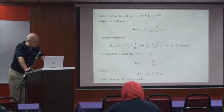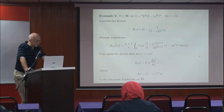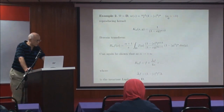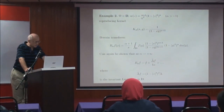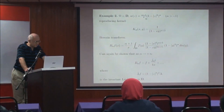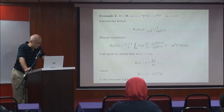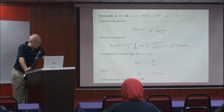Second example: we take the unit disc, or for those who prefer it, the non-Euclidean model — the Poincaré half-plane. We take the unit disc and the weight, again depending on a parameter alpha which will become 1 over the Planck constant, and we take the weight as 1 minus mod z squared to the power alpha, times the normalizing constant alpha minus 1 over pi, to make this a probability measure. The reproducing kernel is now given by a simple expression.